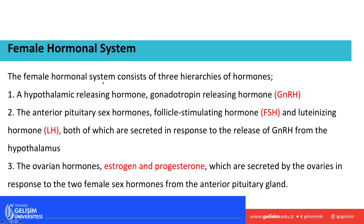The female hormonal system involves three hierarchies of hormones: the hypothalamic gonadotropin-releasing hormone (GnRH); the anterior pituitary hormones FSH and LH, secreted in response to GnRH; and the ovarian hormones estrogen and progesterone, secreted by the ovaries in response to FSH and LH.